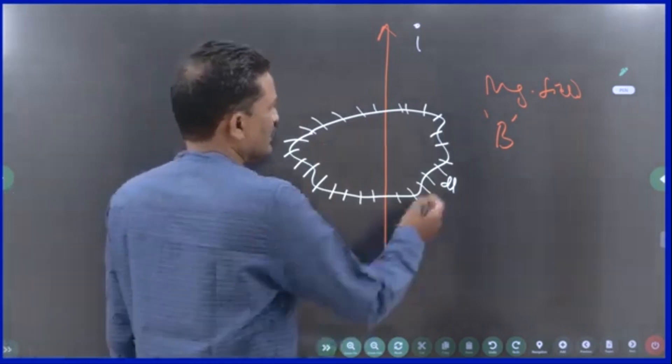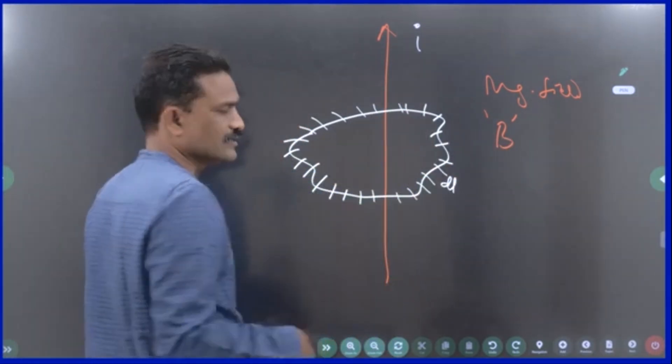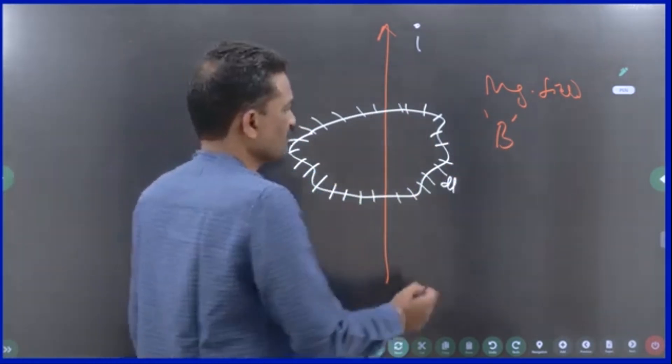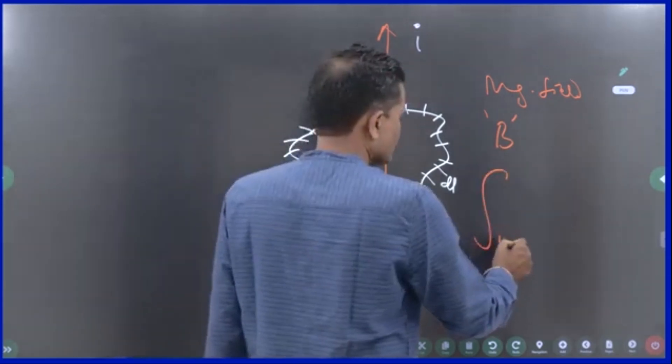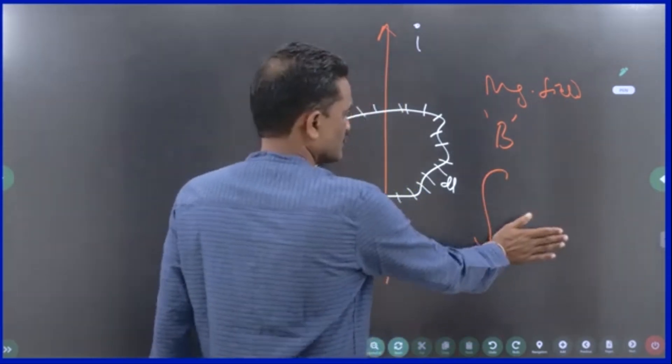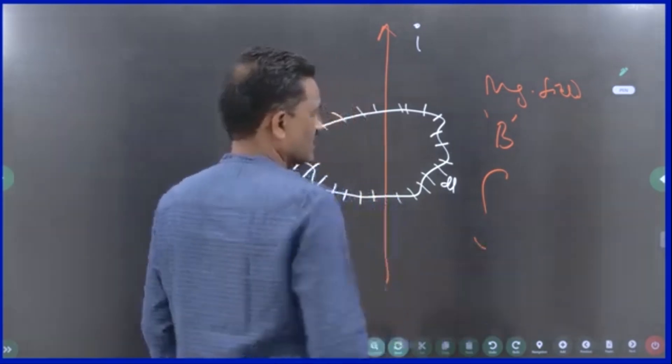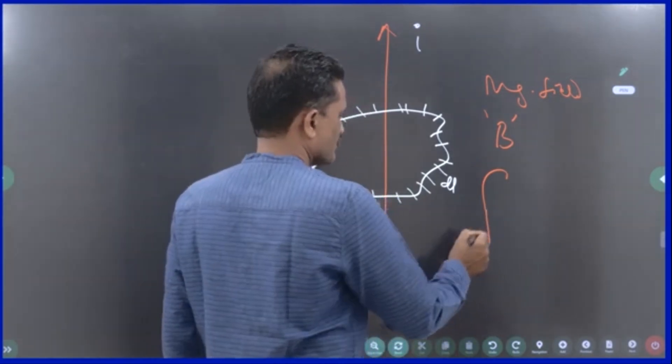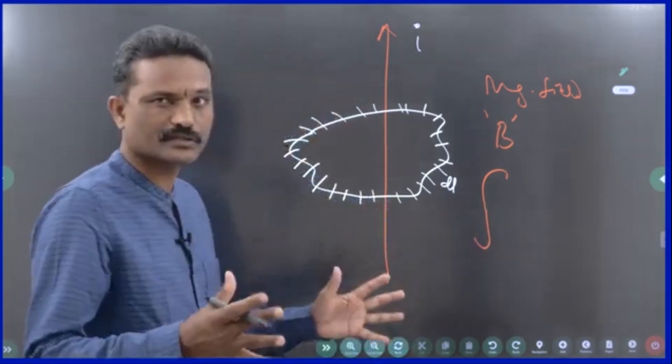So, what I do? I multiply b dl and then take the integration. Integration means summation. Sum, instead of writing sum all the time, they started writing only the symbol. For BIEEE people integration means addition.